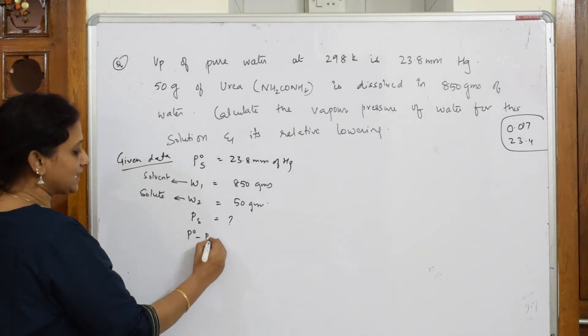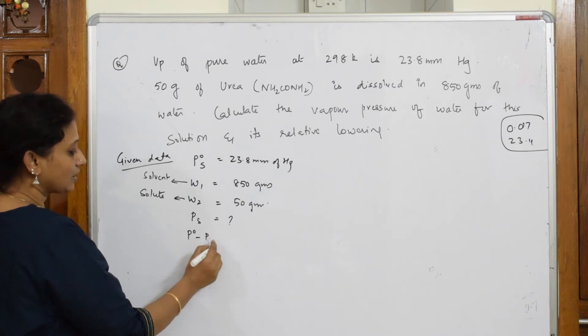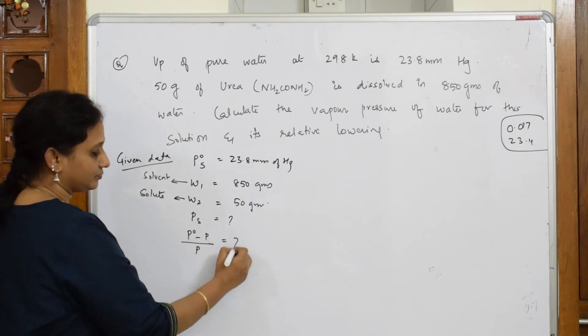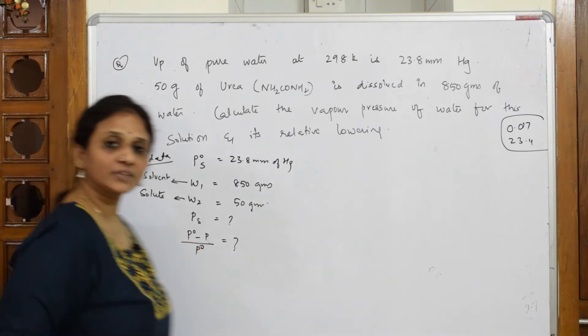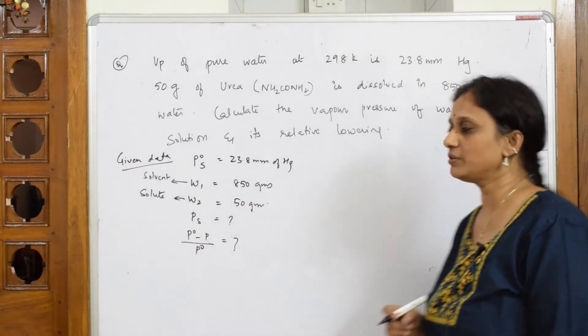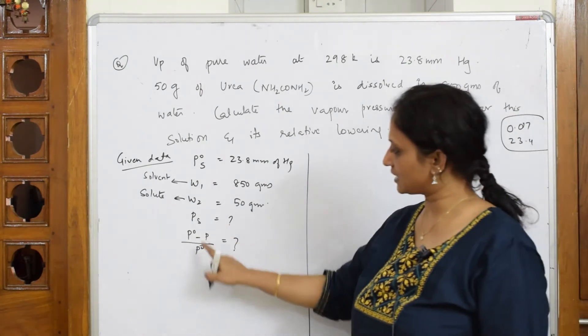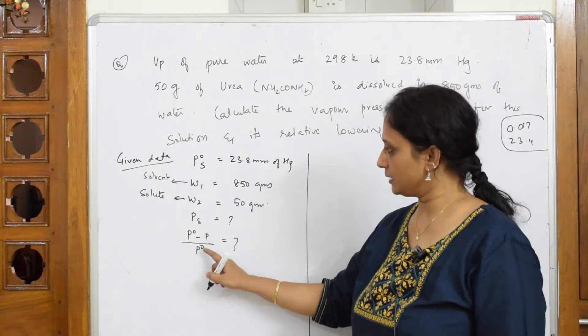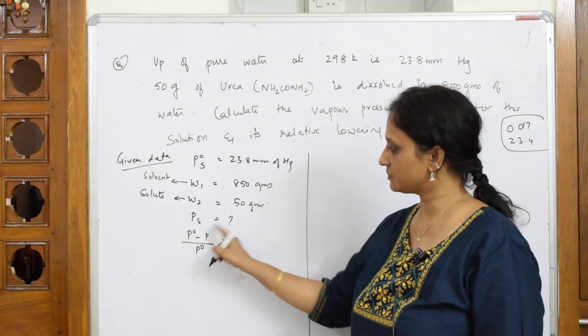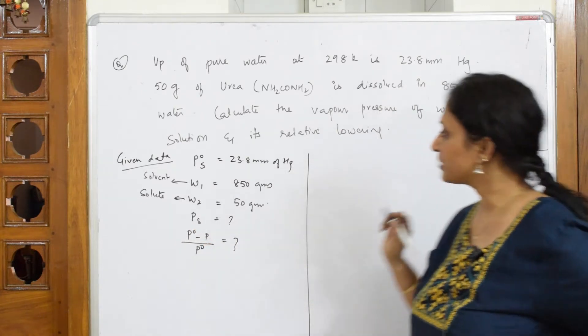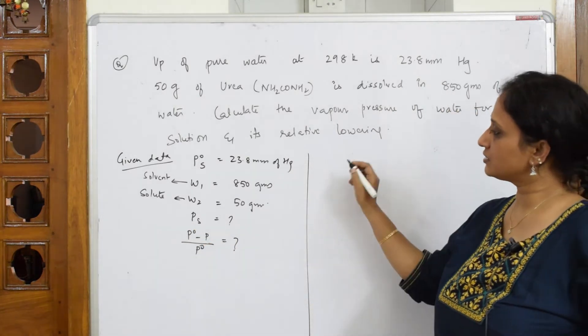I have to calculate what? Vapor pressure of water means PS. How much is this? And its relative lowering - I should also calculate this. I have to calculate this also: relative lowering of vapor pressure. Let's start. So first important thing, let us try to find out this concept, then substitute in this and finally find it.